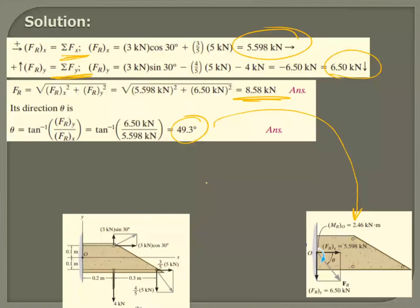Yes, it's already given here, point O. So the resultant force applies on the body, it can apply anywhere—at point O, point A, point B, point C, point D. Anywhere, the resultant force is 8.58 kilonewton.